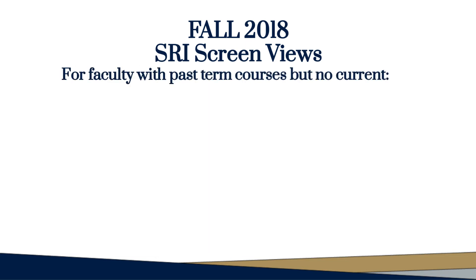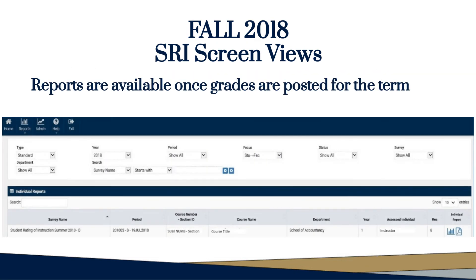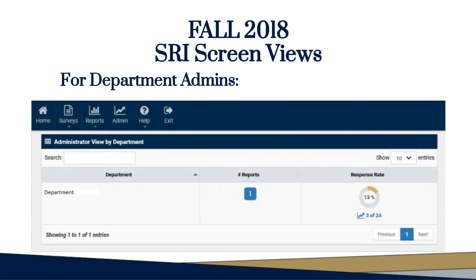Faculty who don't have any current term courses will see a link to past reports if they've taught in the past. Reports for the current term are available after grades are posted. Department admins can see the reports, once available, for all of the courses taught within their department.